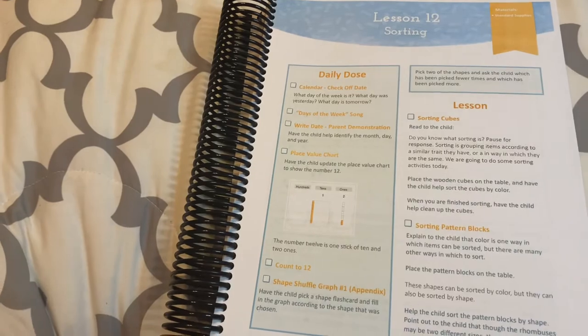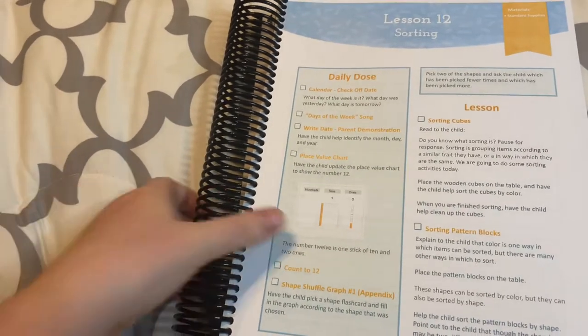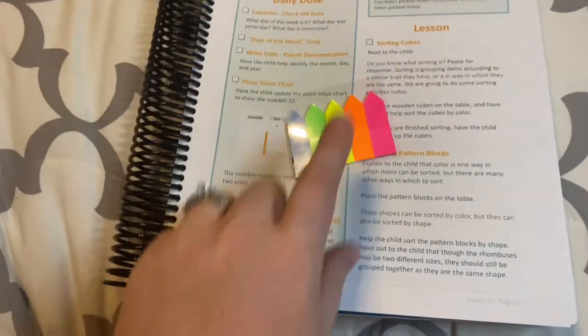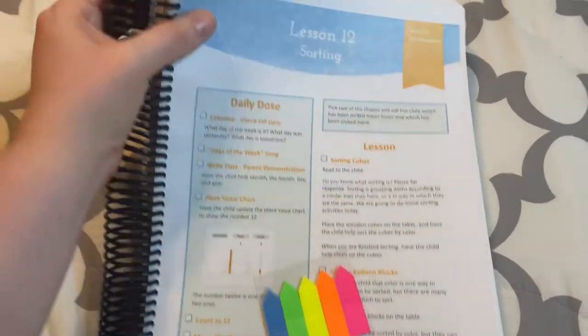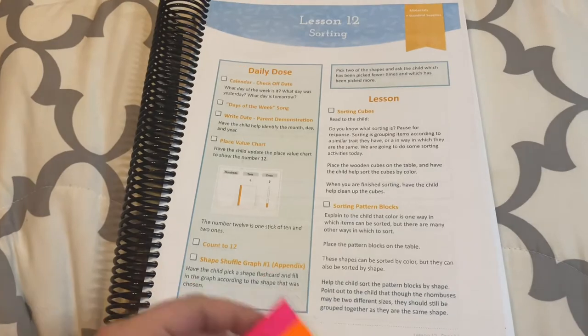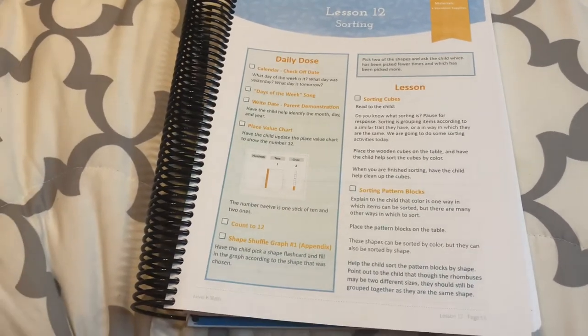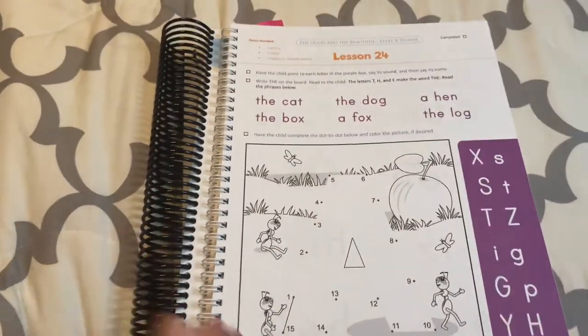I also have these tabs just to keep our places and things like there's something in the back here that she has to use almost every lesson. So it's just easy for us to flip through and not have to worry about losing our place. And then I'll go through her language art, which is we are doing...